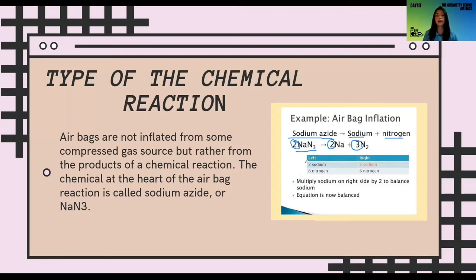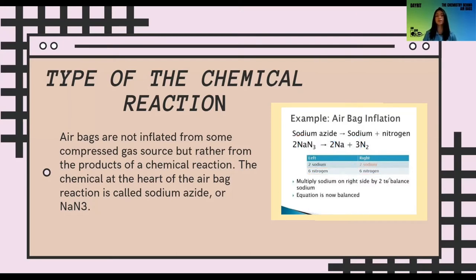On the left side, we have two sodium because we distribute the coefficient to the sodium, so we get two sodium. And we also distribute it to the nitrogen — two times the subscript three gives us six nitrogen. On the right side, there is an invisible coefficient of one, so two times one gives us two sodium. And the subscript here is two, so we multiply by three to get six nitrogen. So as you can see, both sides are equal. We add stoichiometric coefficients to balance the equation — multiply sodium on the right side by two to balance sodium. Now the equation is balanced.